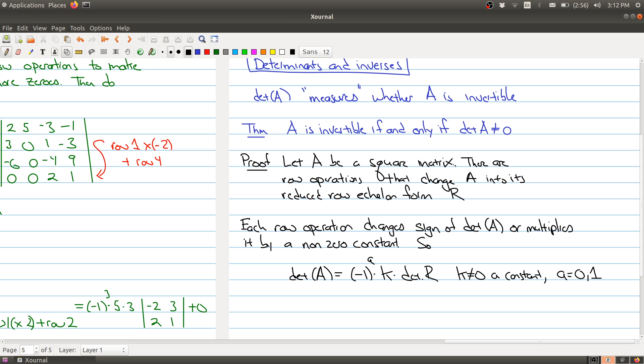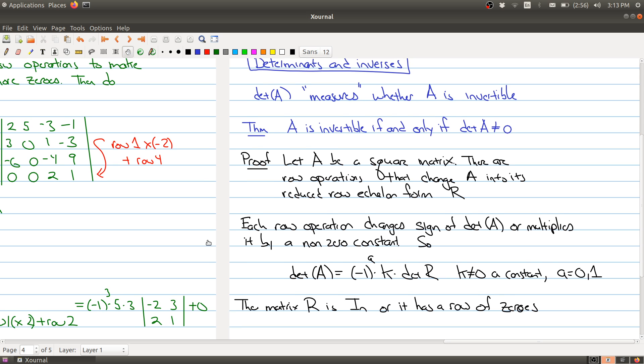Okay. And now what else do we know is we know that the matrix R is either the identity or it has a row of zeros because you're starting with a square matrix. So when you put it into reduced row echelon form, you have to end up with one of these two forms. Okay. So let's finish up the proof using this kind of setup.